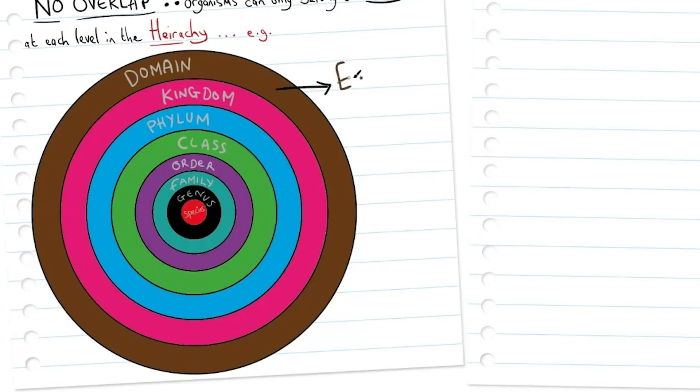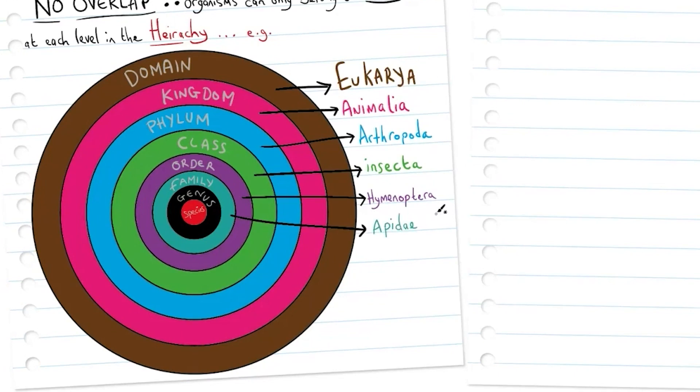As an example, the domain, the largest, could be Eukarya for the eukaryotes. Kingdom could be Animalia, phylum could be Arthropoda, class Insecta, order Hymenoptera, family Apidae, genus could be Apis, and the species mellifera.